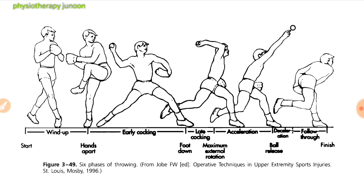Athletes who participate in swimming, tennis, or throwing sports experience repetitive trauma to the shoulder joint and are prone to shoulder disorders. The frequency of injuries is related to the age of the athlete and the level of competition.